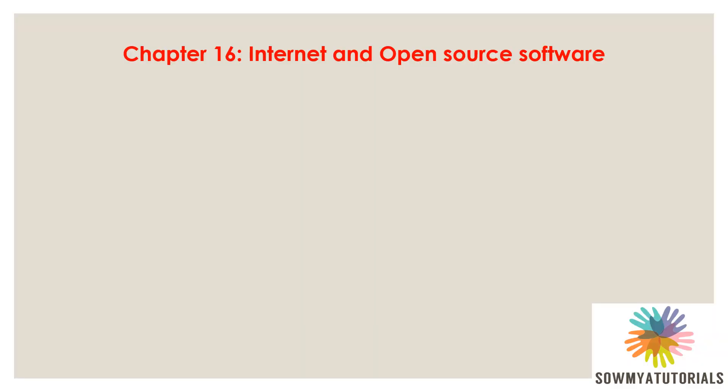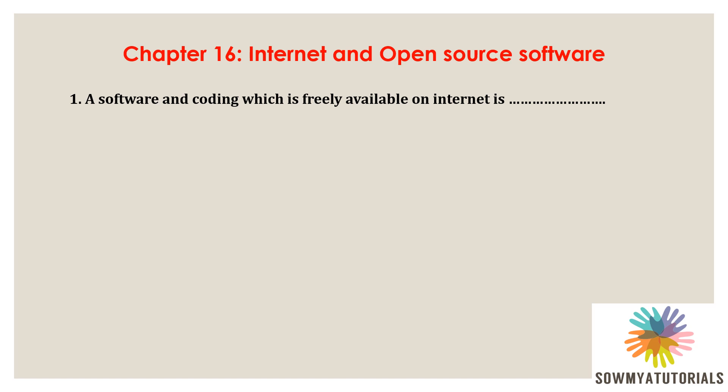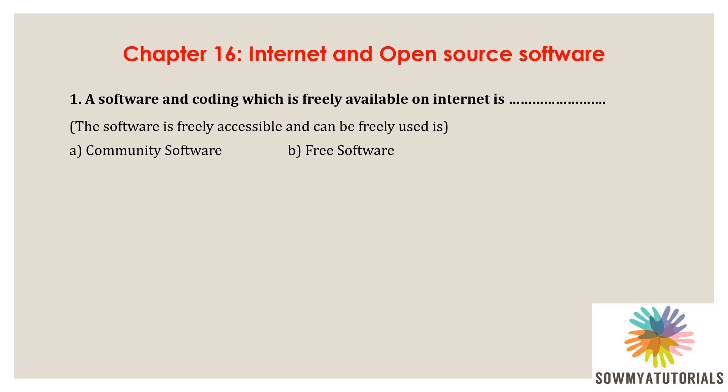Let us begin some multiple choice questions from this chapter. The first question is: a software and coding which is freely available on the internet is — Options: A) Community Software, B) Free Software, C) Open Source Software, D) Unlicensed Software.